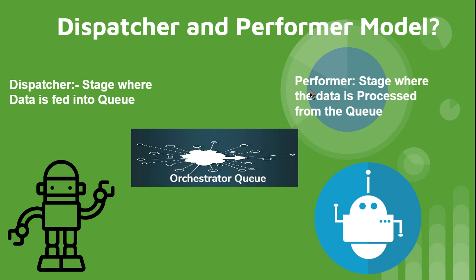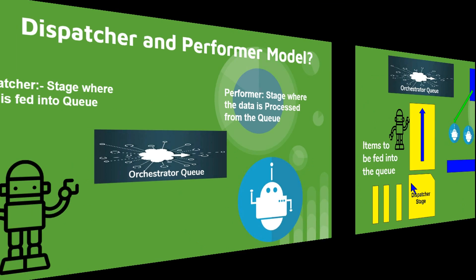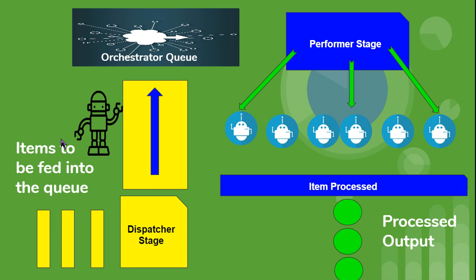Orchestrator queues follow the dispatcher and performer model. The dispatcher is responsible for feeding data into the orchestrator queue, which is in the cloud. You create a workflow using certain activities to transfer data from an Excel file or from an application into the orchestrator queue. Once the data is uploaded, the queue has the intelligence to distribute that work to several robots.